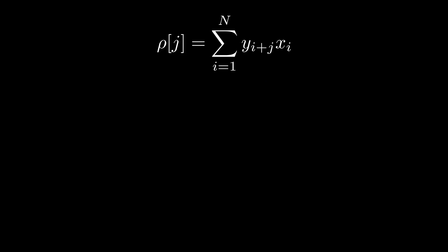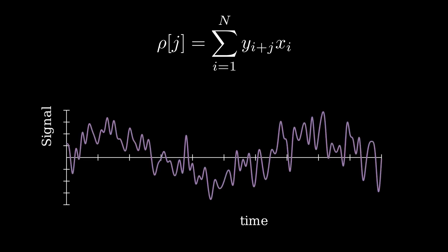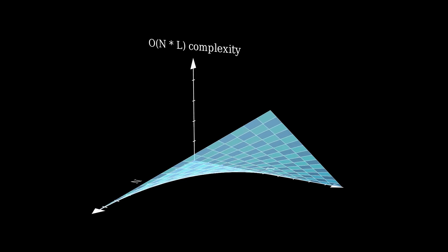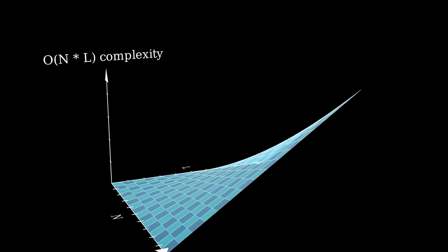Changing j lets us slide the template signal back and forth to maximize the signal-to-noise ratio with respect to the data stream. Classically computing this convolution scales like O of n times l, where n is the size of the template signal, and l is the stream of data points. This means if we want to analyze a signal, it takes us about n, the size of the template signal, times l, the number of data points, number of operations, in order to actually compute the convolution.